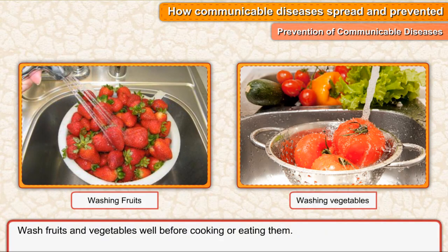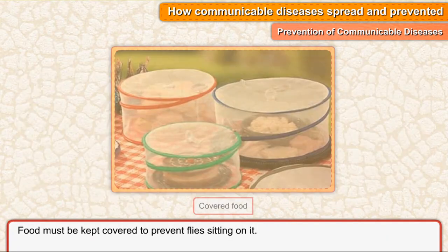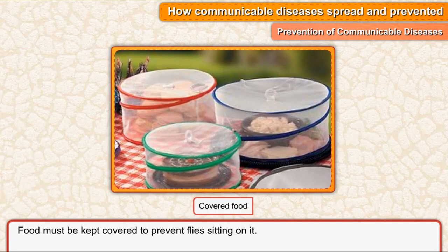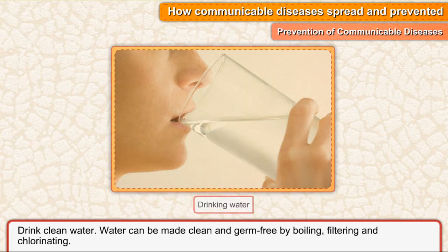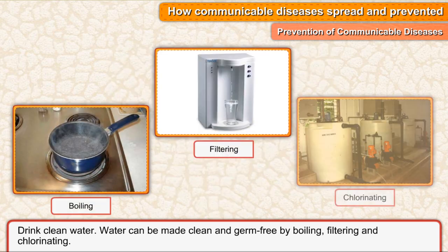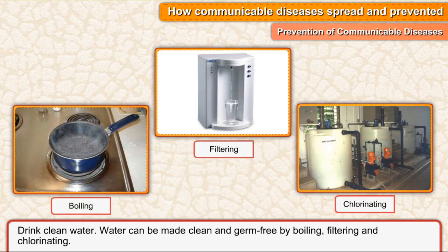Wash fruits and vegetables well before cooking or eating them. Food must be kept covered to prevent flies sitting on it. Do not allow heaps of garbage to collect near your home. Dust bins should be kept covered. Drink clean water. Water can be made clean and germ-free by boiling, filtering, and chlorinating.